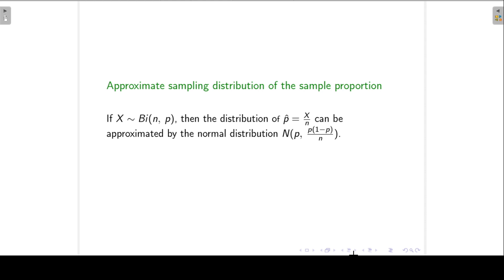So we can now say that if X follows the binomial distribution with parameters n and p, then the sampling distribution of p-hat, the number of successes in the sample over the sample size, is approximately normal with a mean of p and a variance of p(1-p) over n.